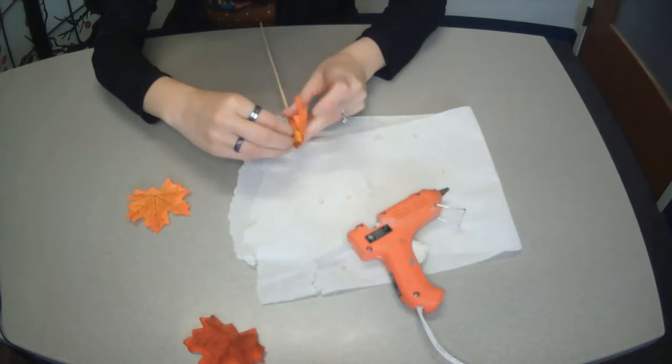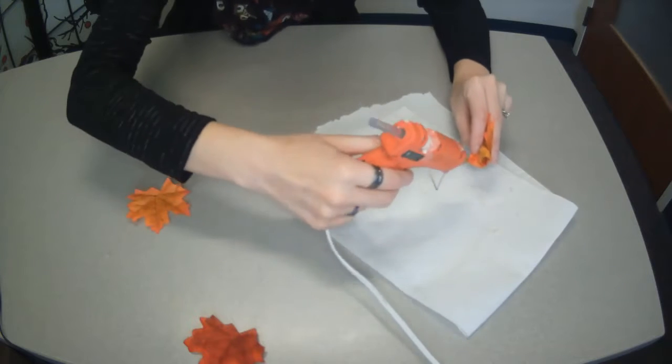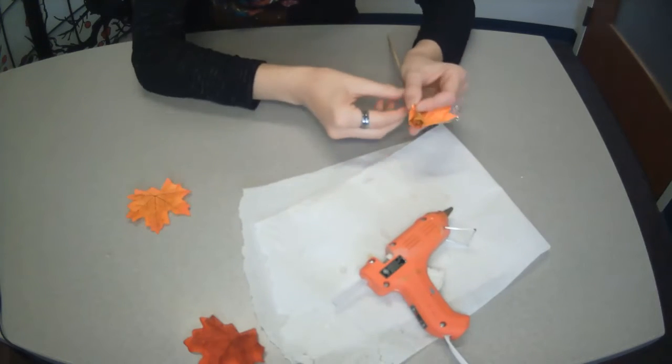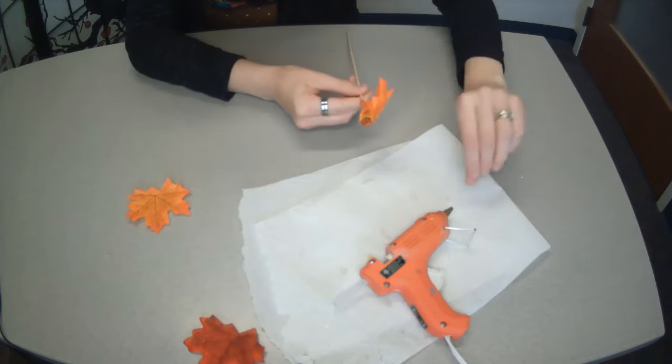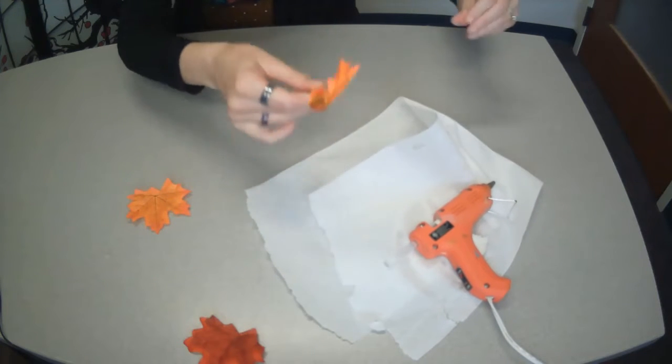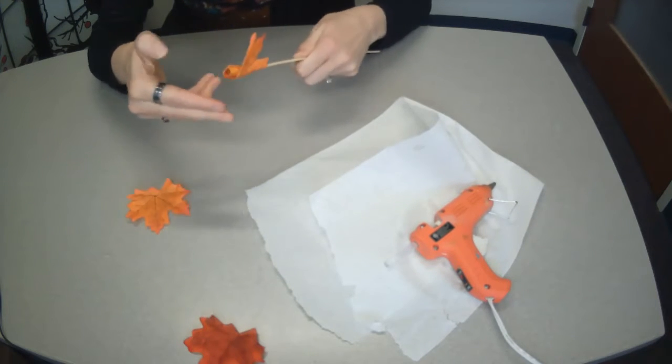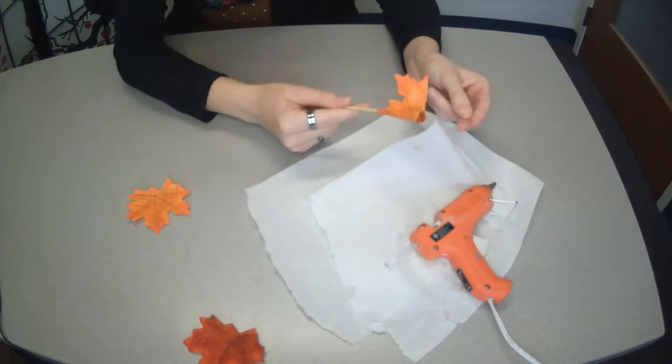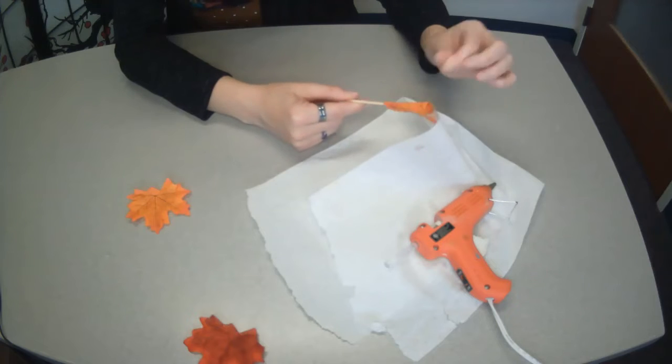And just however it falls. It doesn't have to be exact. We're just folding it so that it stays kind of flat. My apologies, my glue gun is just barely reaching from the outlet over there. So there's that.